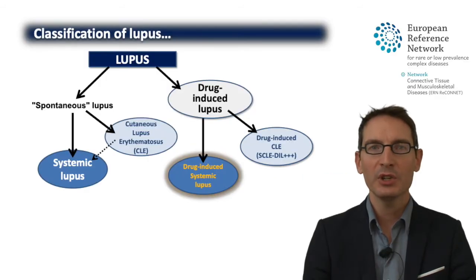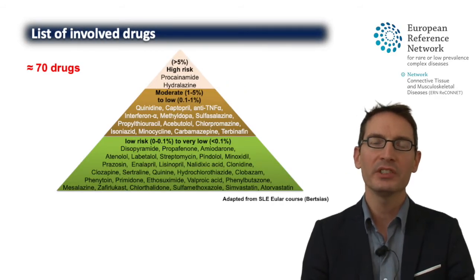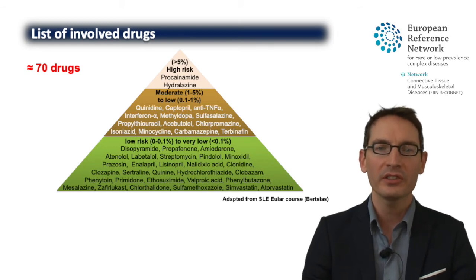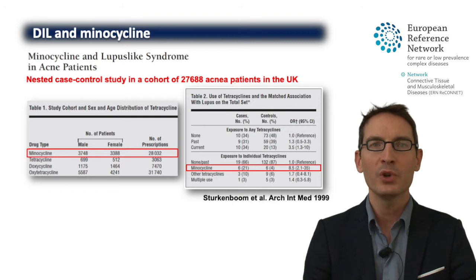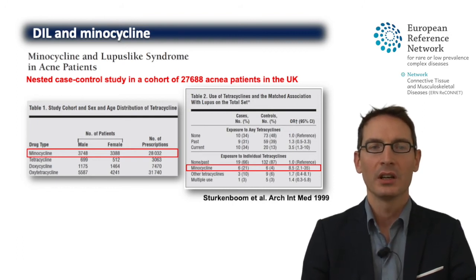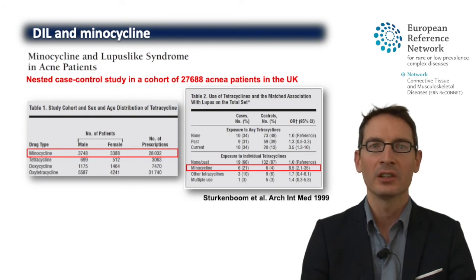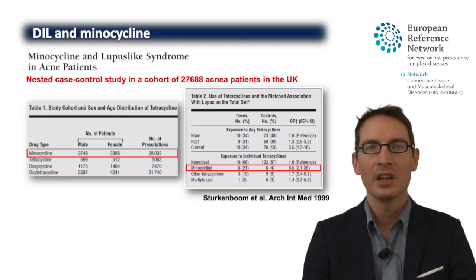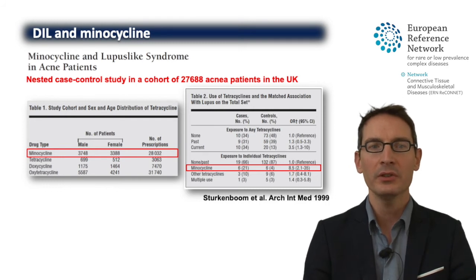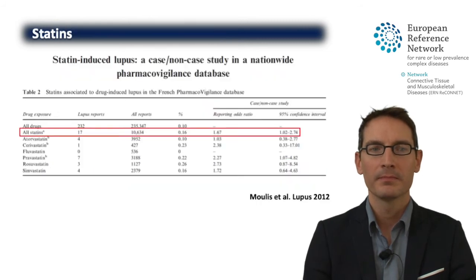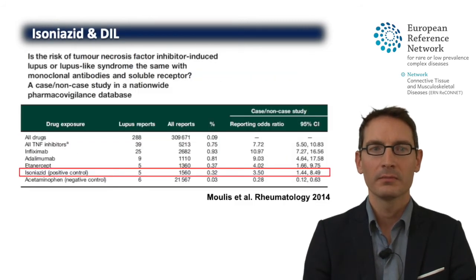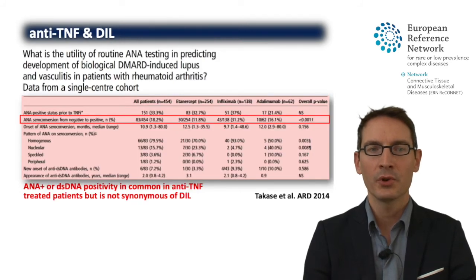Regarding systemic lupus-inducing drugs, it is a bit different. More than 70 drugs are responsible, but for most of them we only have data from case reports. Drugs reported in case-controlled studies are less common and include minocycline, hydralazine, carbamazepine, the statins, isoniazid, and of course anti-TNF agents.